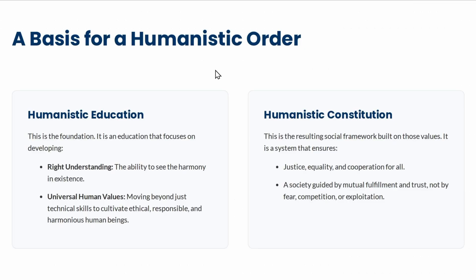The basis for humanistic order has two components: humanistic education and humanistic constitution. Humanistic education develops right understanding and values, and helps students see their role in harmony — with self, with others, with family, with society, with nature, and with existence. Knowledge and right understanding gained from education lead to responsible living, which further leads to sustainable happiness.